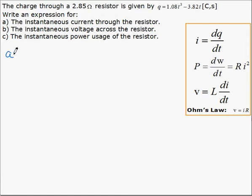So for part A, the current: current is I, the derivative of Q with respect to T. We know Q, we simply take the derivative. So I, or dQ by dT, is 3 times 1.08, which is 3.24T squared minus 3.82.